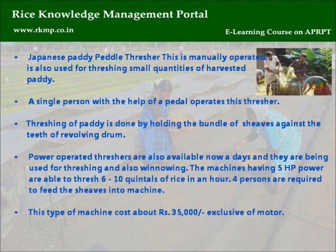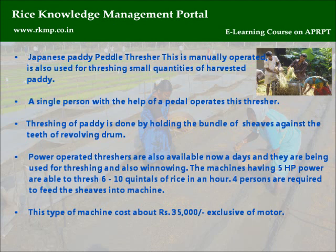Japanese paddy pedal thresher: This is manually operated and used for threshing small quantities of harvested paddy. A single person, with the help of a pedal, operates this thresher. Threshing is done by holding the bundle of sheaves against the teeth of a revolving drum. Power-operated threshers are also available and are used for threshing and winnowing. Machines having 5 HP power are able to thresh 6-10 quintals of rice per hour, requiring four persons to feed the sheaves. This type of machine costs about Rs. 35,000, exclusive of motor.